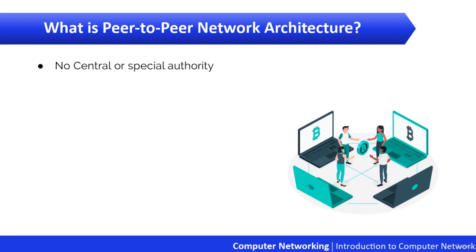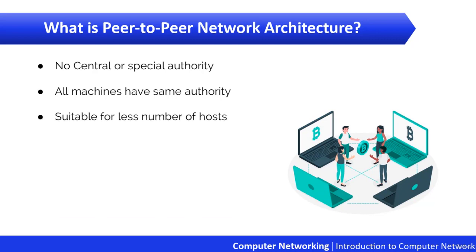But when a teacher enters a classroom, the teacher has overall authority — that is an example of client-server architecture. In peer-to-peer, the authority to perform a security check for proper access rights lies with the computer that has the desired resources being requested. Computers in a peer-to-peer network can act as both client machines that access resources and server machines that provide those resources to other computers.